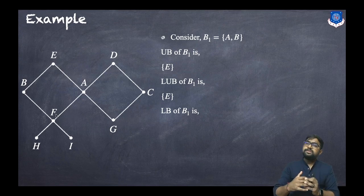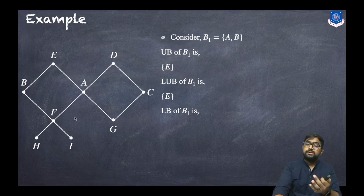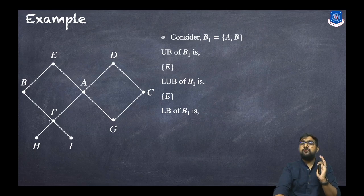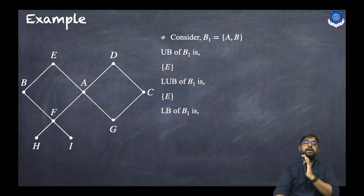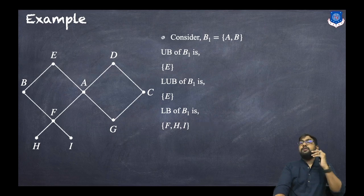Now for the lower bound of B1: for lower bounds there has to be a relation from the lower points to the given set. The lower points are f, h, i, and g. Can we go from f to b? Yes. Can we go from f to a? Yes. So f is a lower bound. Similarly, h to b and h to a — h is a lower bound. And i to b and i to a — i is a lower bound. But from g we can go to a but not to b, so g cannot be a lower bound. The lower bounds are f, h, and i.